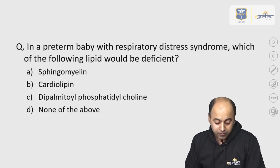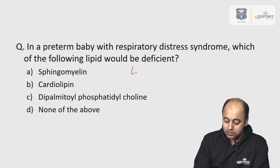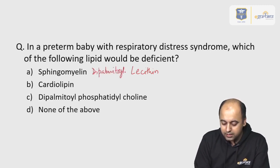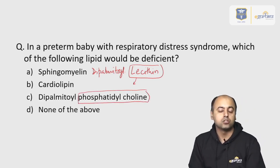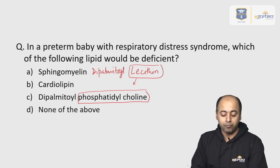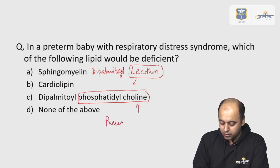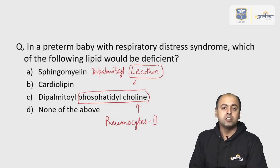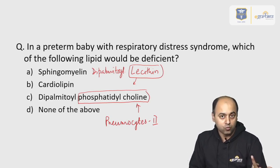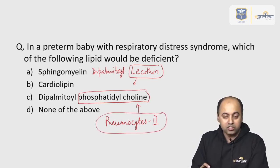A question from the lipid section: in a preterm baby with respiratory distress syndrome, which lipid is deficient? The answer is lecithin — more precisely, dipalmitoyl lecithin, also known as dipalmitoyl phosphatidylcholine. It is produced by type 2 pneumocytes. In preterm babies, these cells are not mature, so dipalmitoyl lecithin formation is insufficient, leading to respiratory distress syndrome.